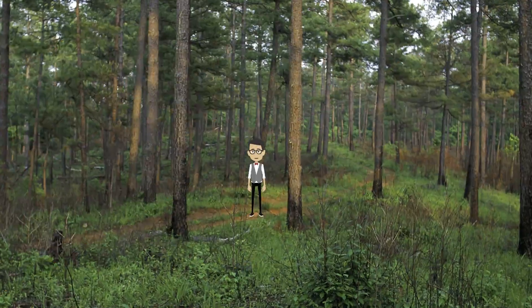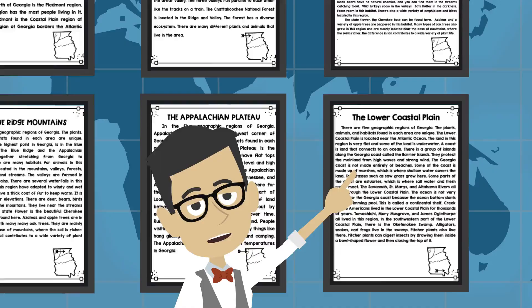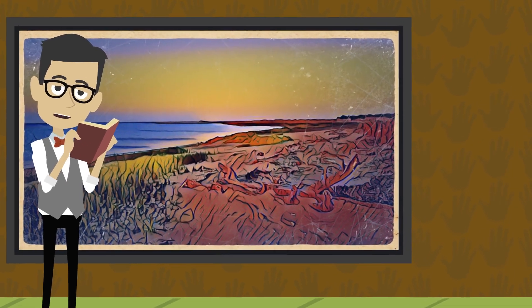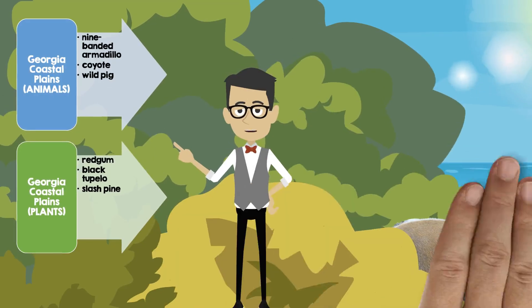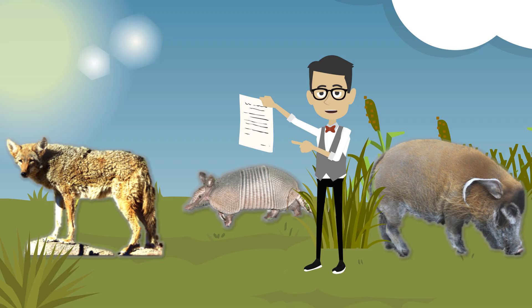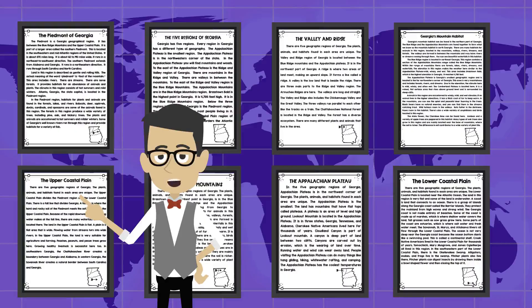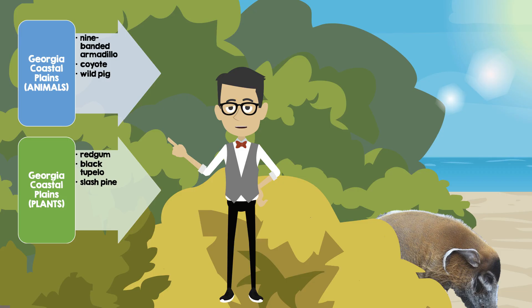Growing healthy livestock is also successful in the coastal plain. The Chattahoochee River creates a boundary between Georgia and Alabama, and the Savannah River creates a natural border between South Carolina and Georgia. Among the many animals, the nine-banded armadillo, the coyote, and the wild pig have been observed. Plants include the red gum, the black tupelo, and the slash pine.